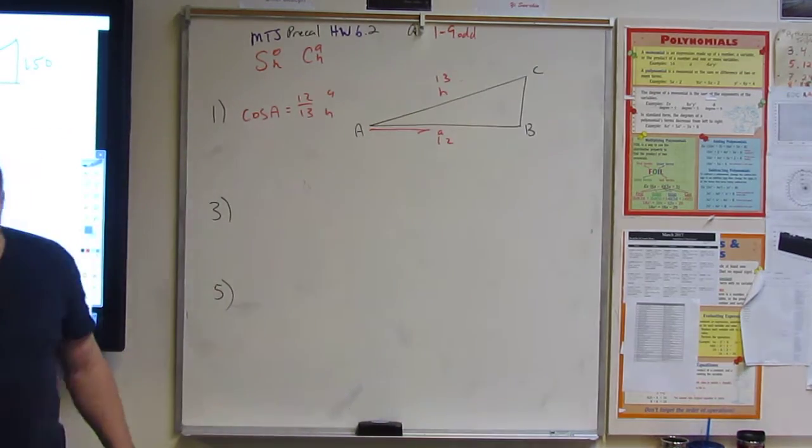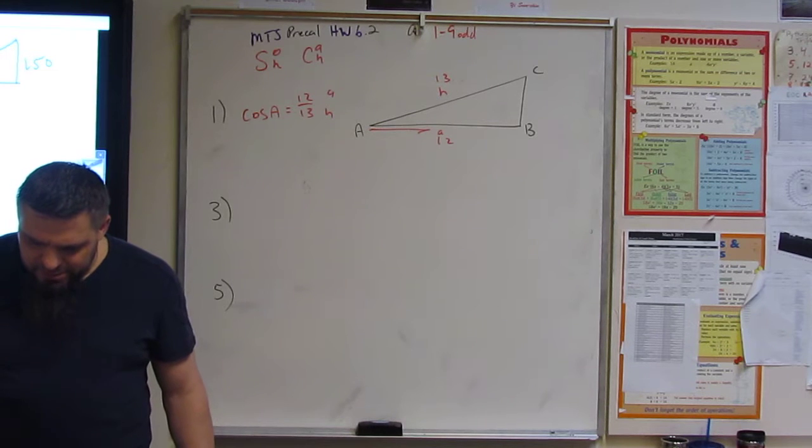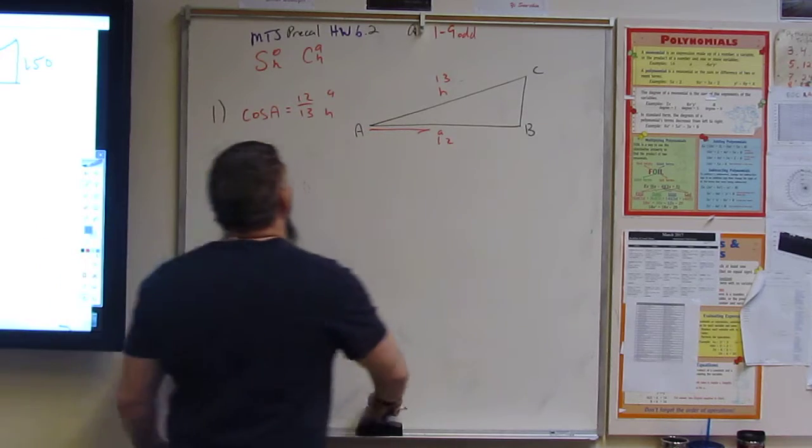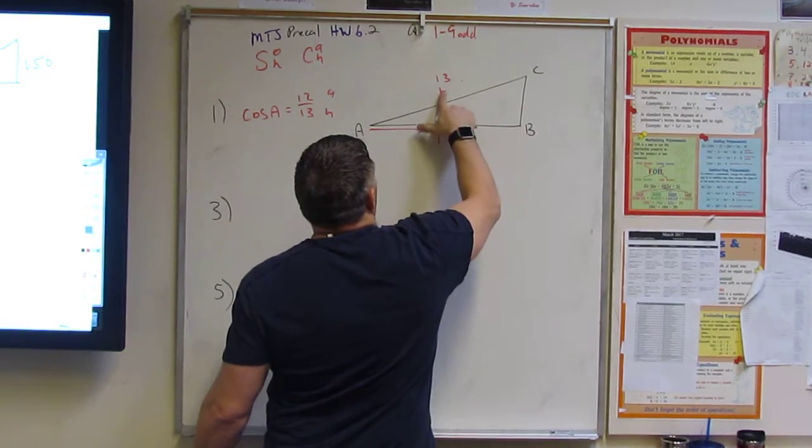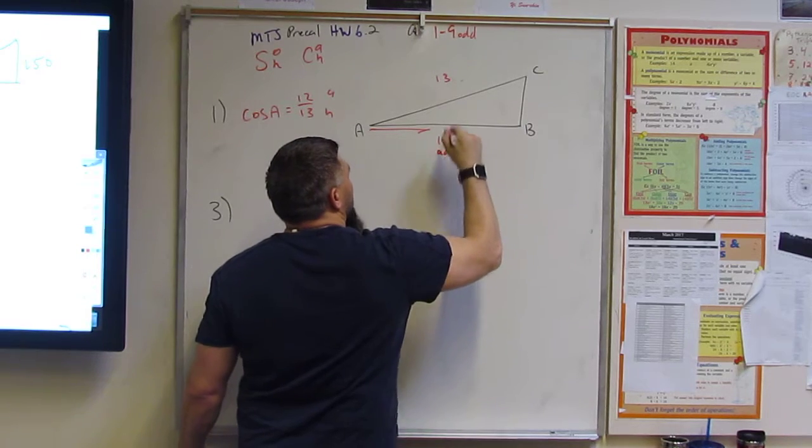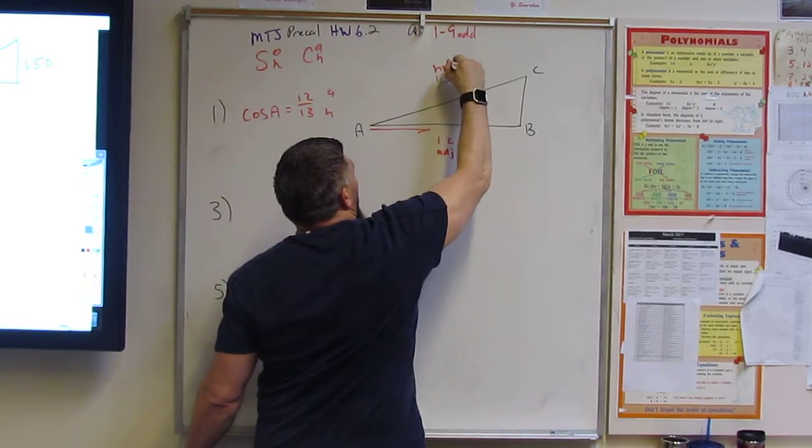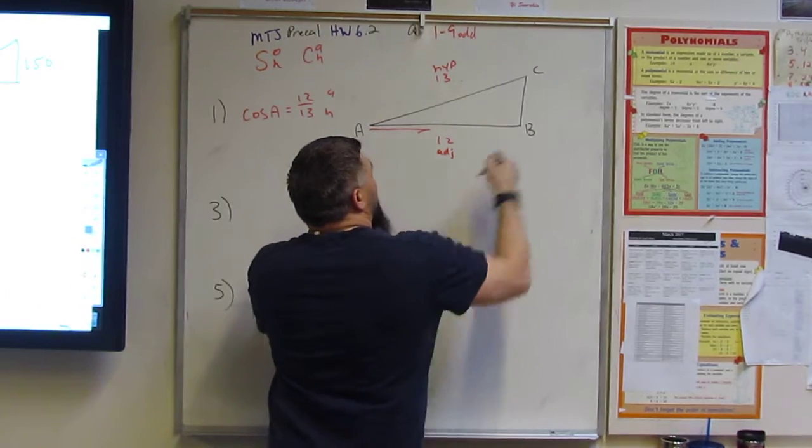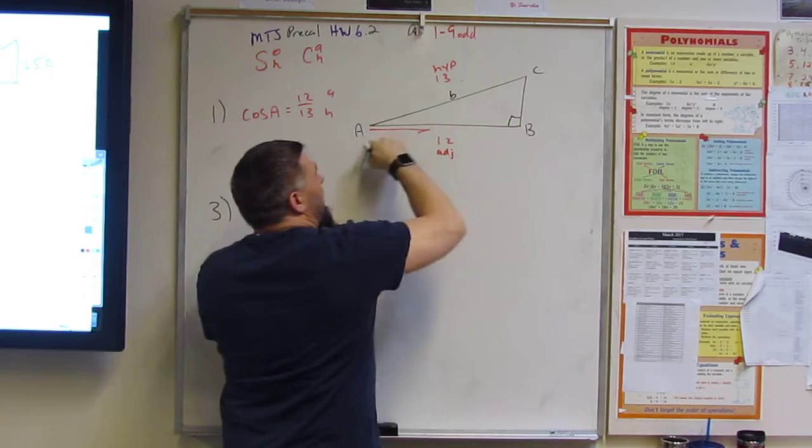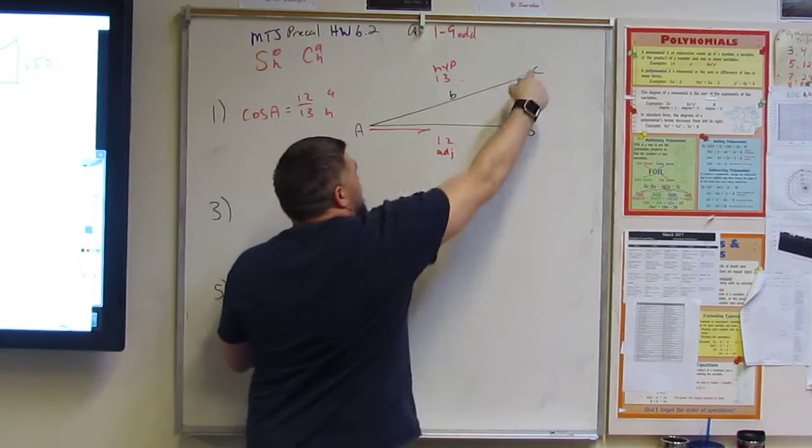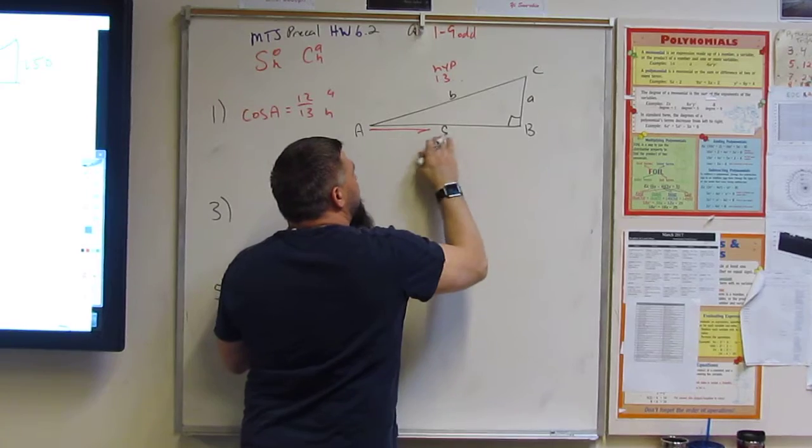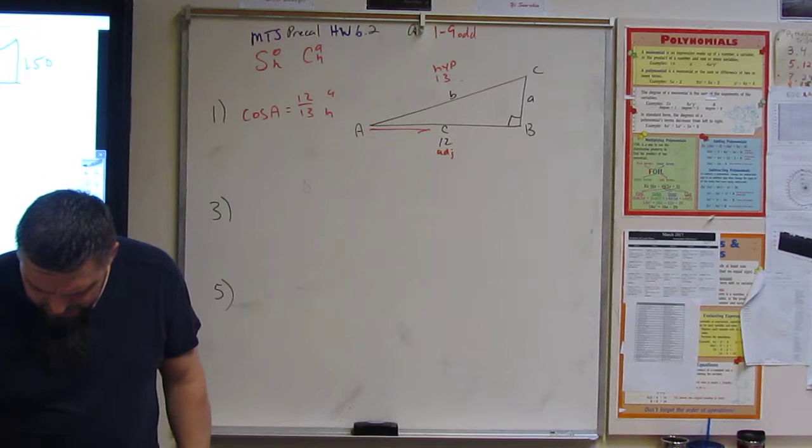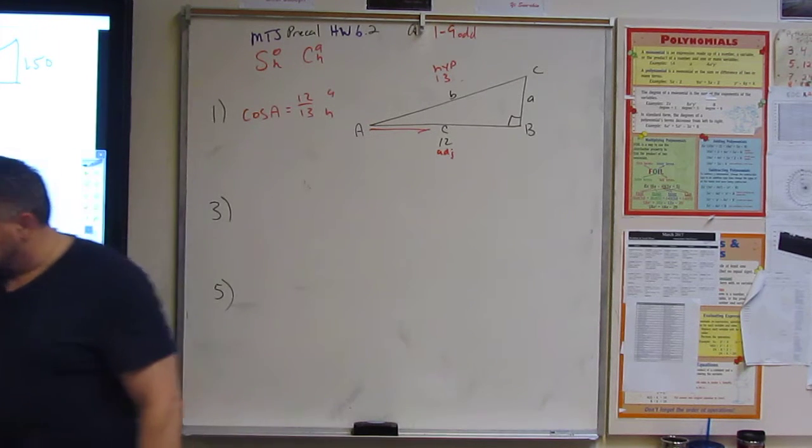And so what they want us to find is C. They always want us to find C. Sorry, A meaning the adjacent, and H meaning the hypotenuse. So remember, B is across from B, little A is across from A, and C is across from C.